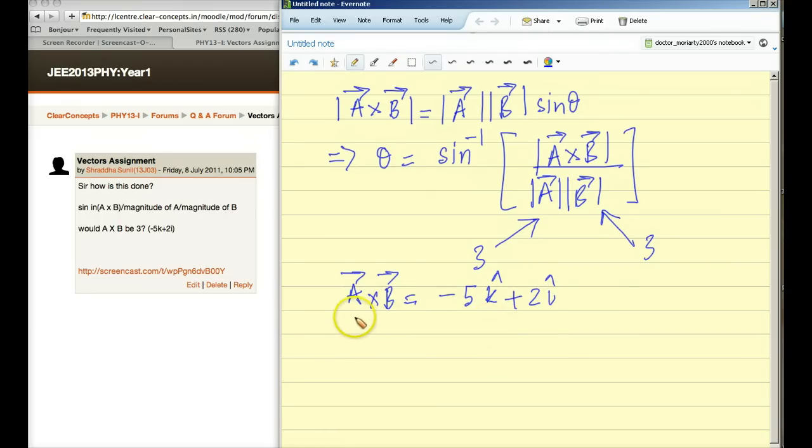Surely, you know how to find the magnitude of a cross b, right? Which is what you need to plug in here. Not a cross b, but magnitude of a cross b. And the magnitude of a cross b, as you know, is going to be equal to under root of minus 5 squared plus 2 squared. Okay? So if you plug in these values, this is the value of magnitude of a cross b.